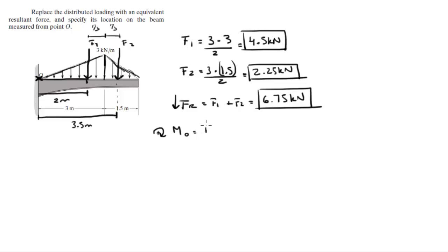So F1 times 2 meters plus, they're positive because they're turning the lever arm clockwise and the other one's turning the lever arm clockwise as well. So it's positive so it's F2 times 3.5.